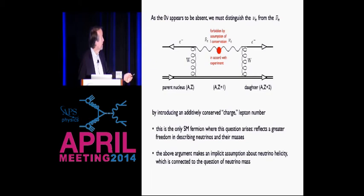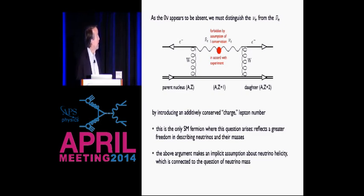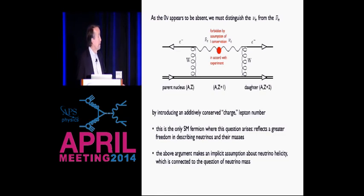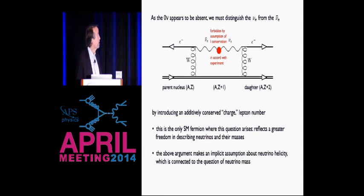So you have to add lepton number to explain the experiments: the antineutrino produced in electron beta decay is just the wrong neutrino to drive the second step, so the neutrinoless process no longer works, and you've introduced this conserved charge. This is the only standard model fermion where these questions arise, because all the other standard model fermions have a charge and so we know they have distinct antiparticles. The problem with this argument — and I'm giving you the arguments as they appeared historically — is that it makes an implicit assumption about the neutrino, particularly about its helicity, which is connected to the question of whether the neutrino is really a massless particle.